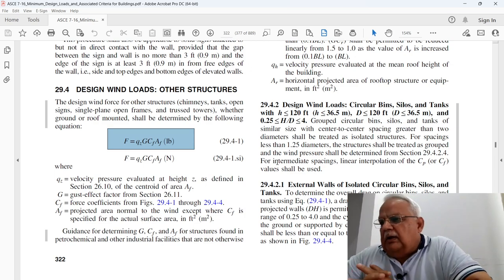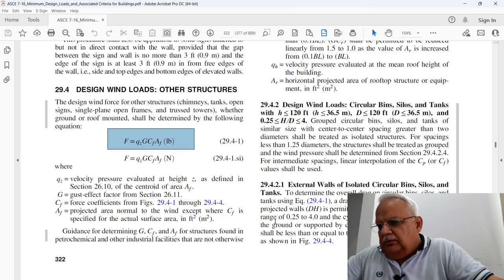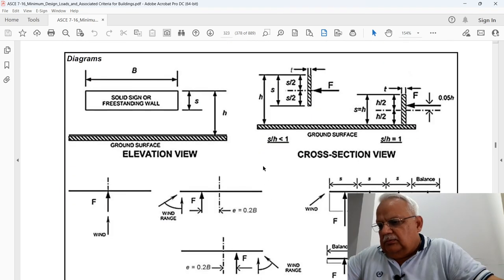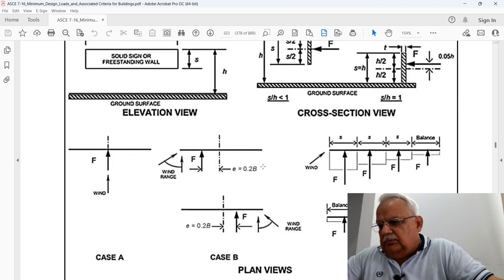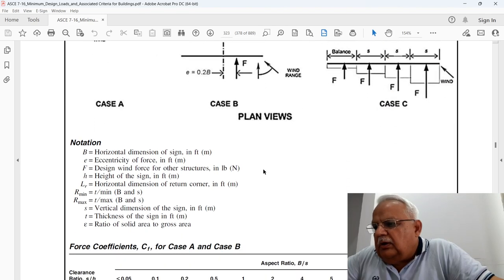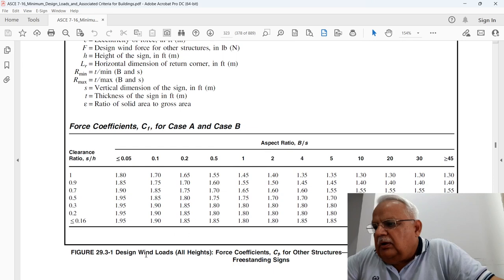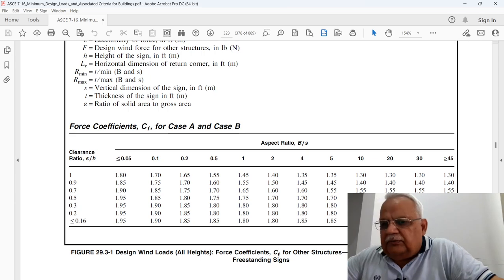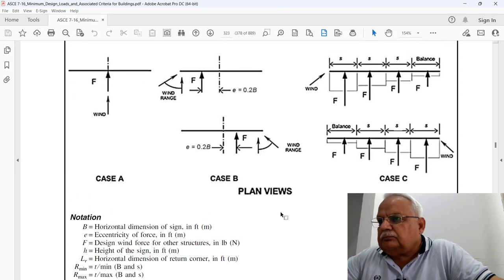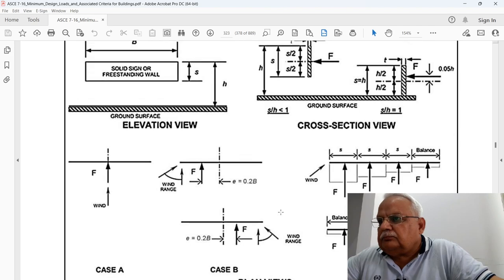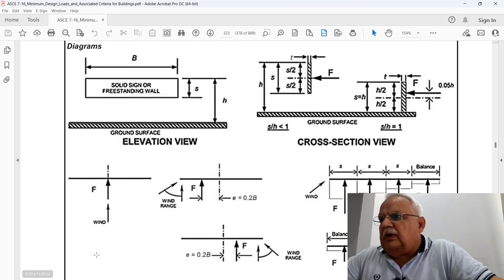Where qz is the wind pressure, G is the gust factor, Cf is the coefficient of the force, and Af is the area of the billboard. Based on that, we have to follow this figure which is figure number 29.3-1, which says design wind loads force coefficient Cf for other structures, solid freestanding walls and solid freestanding signs.